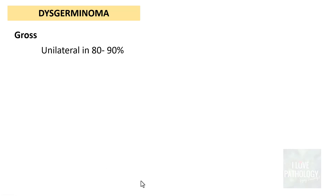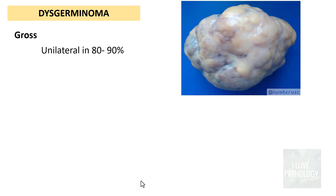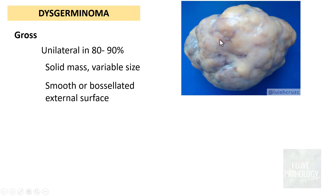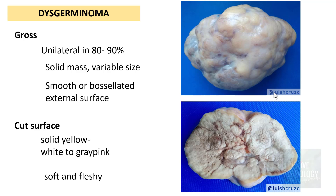Grossly, dysgerminomas are unilateral in 80 to 90% of cases. These tumors are solid masses of variable sizes; the external surface can be smooth or bosselated. These are beautiful illustrations and photographs from Dr. Louis, which you can find on Twitter or the platform X. On cut surface, the section is solid, yellowish-white to gray-pink. What you should note is that it is very soft and fleshy in appearance — a fleshy cut surface is the characteristic feature of germ cell tumors.